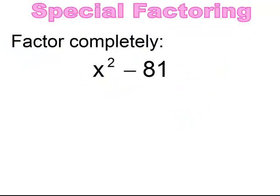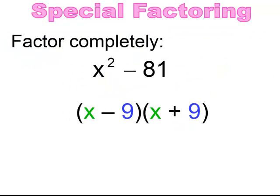Pause and try. For the difference of two squares, you get (x − 9)(x + 9), or equivalently (x + 9)(x − 9).